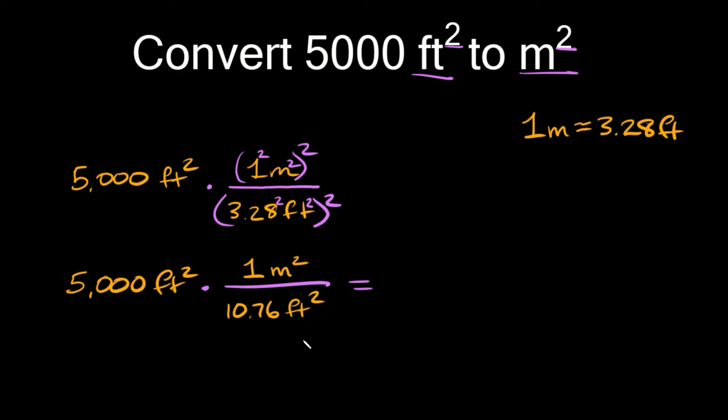So now we can simplify this. So now we just have to multiply straight across. But before we do that let's simplify one more thing. Again we have the same units on top and the bottom so those cancel out. And now we can multiply straight across.